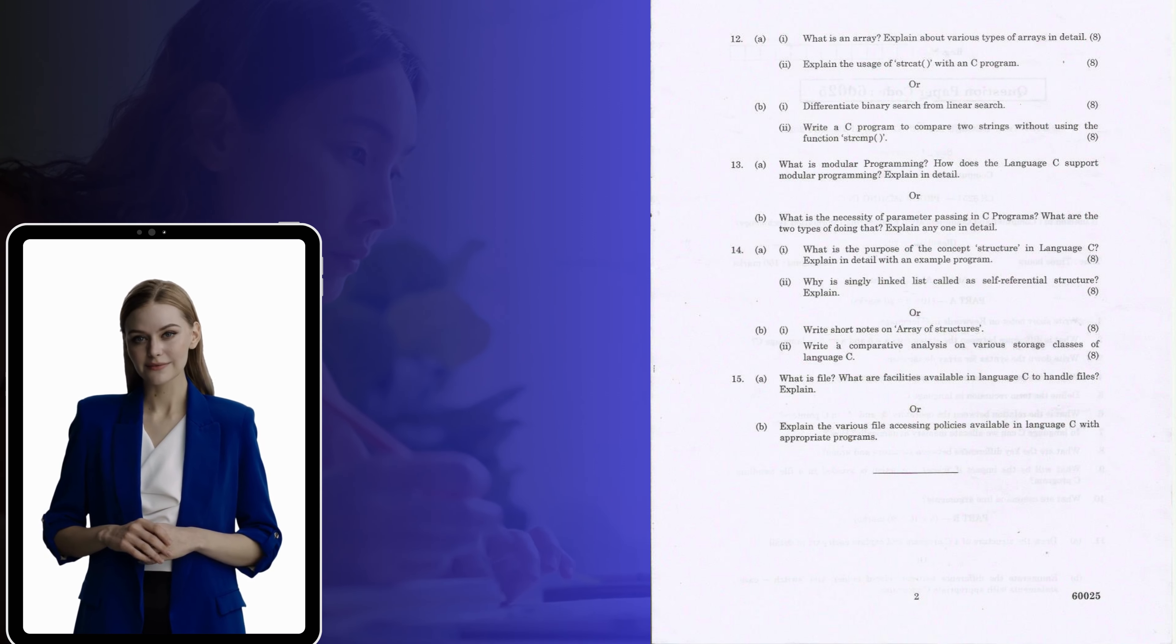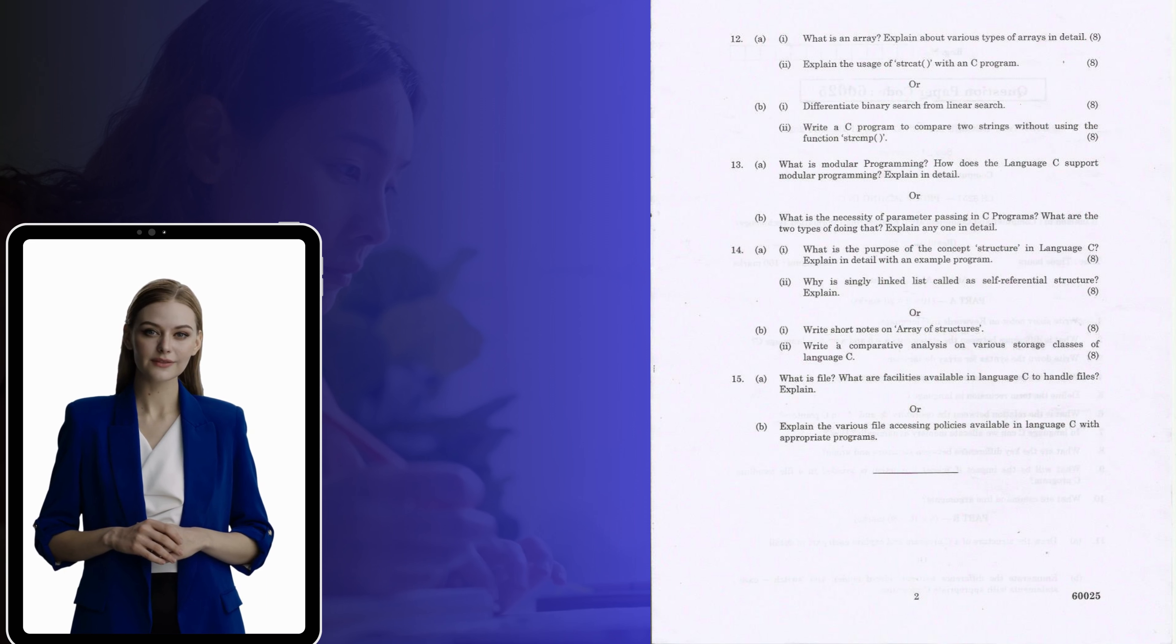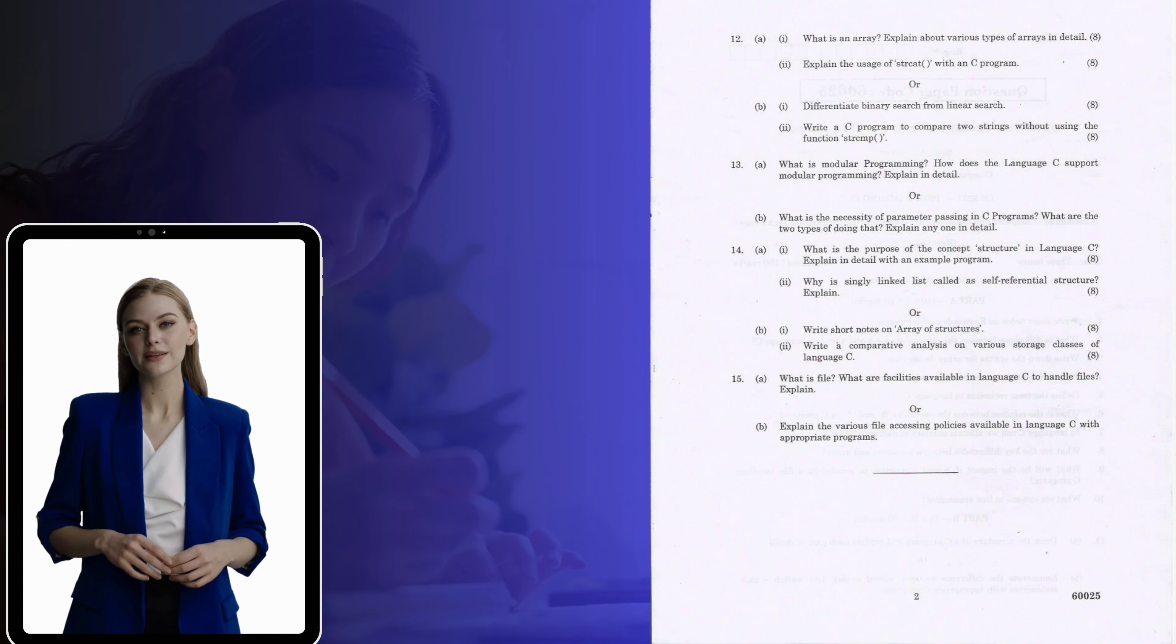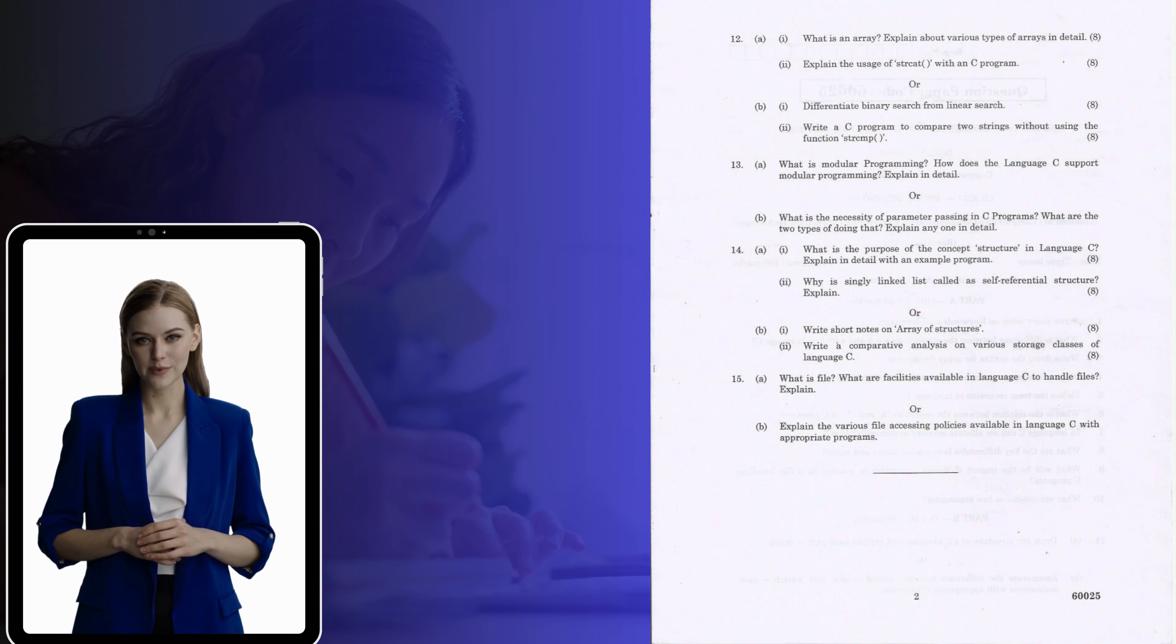12 A. i. What is an array? Explain about various types of arrays in detail. ii. Explain the usage of strcat within C program. Or B. i. Differentiate binary search from linear search. ii. Write a C program to compare two strings without using the function strcmp.